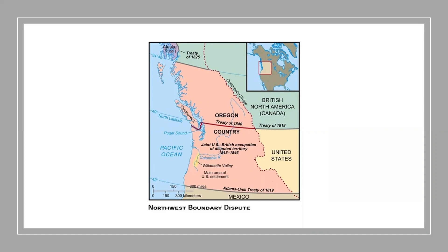It seems logical, when looking at the decision, to continue with the 49th parallel that had been the case further to the east. The 49th parallel then runs all the way to the water — you can see the Puget Sound. The issue of Mexico, however, was far more serious.